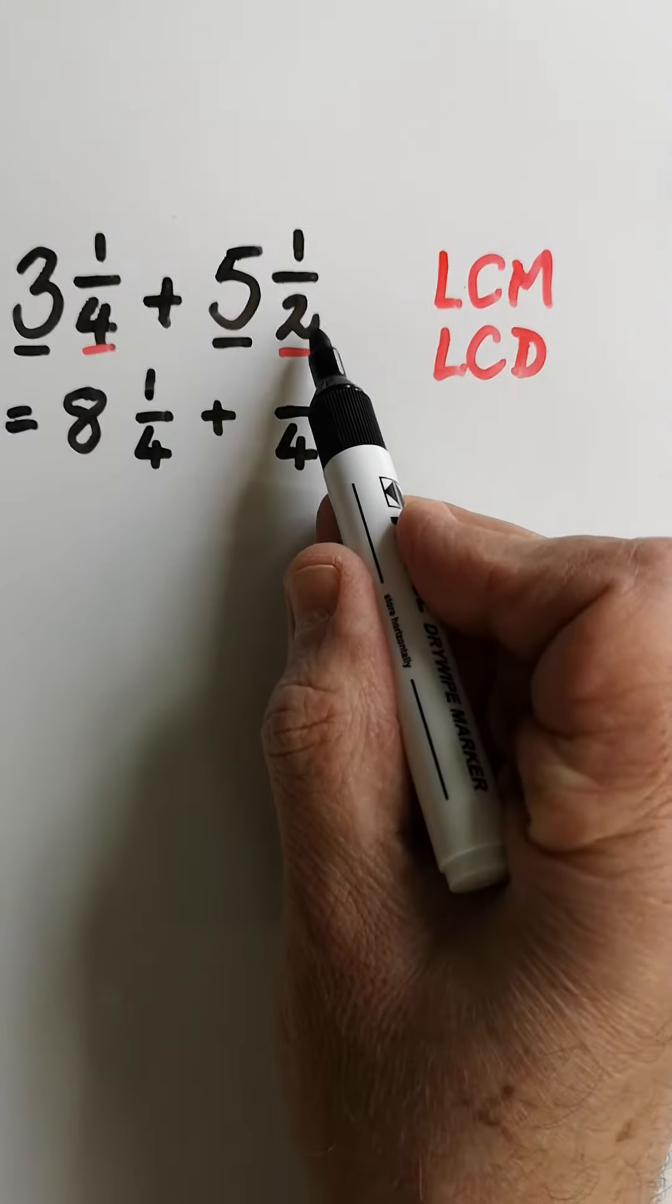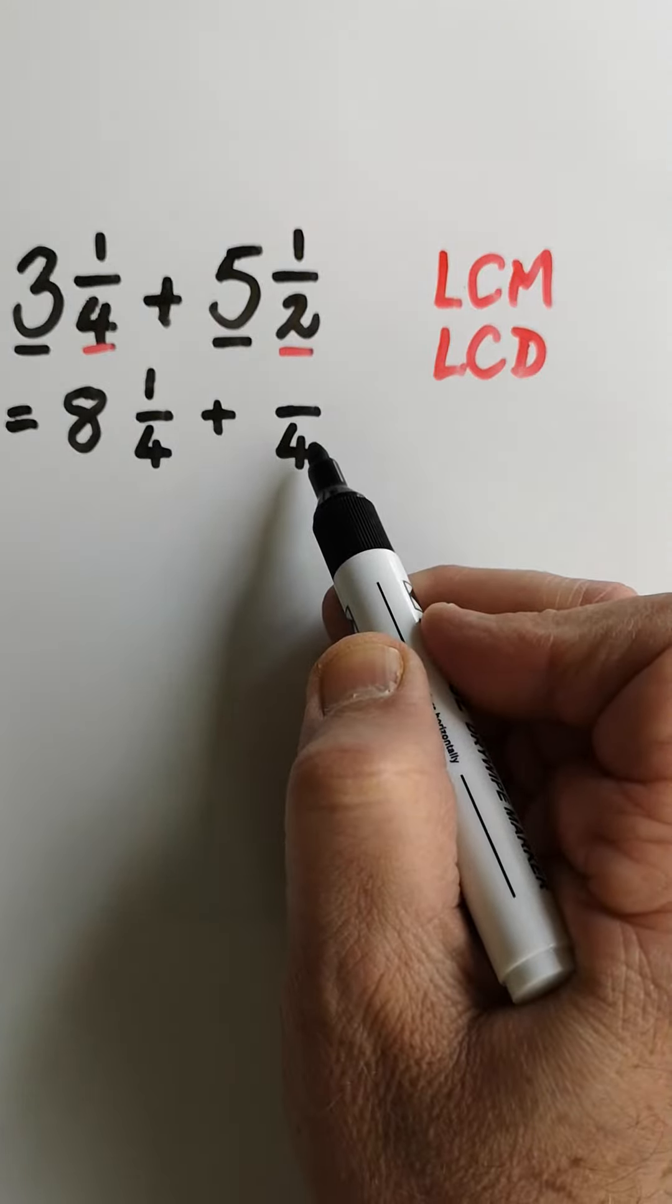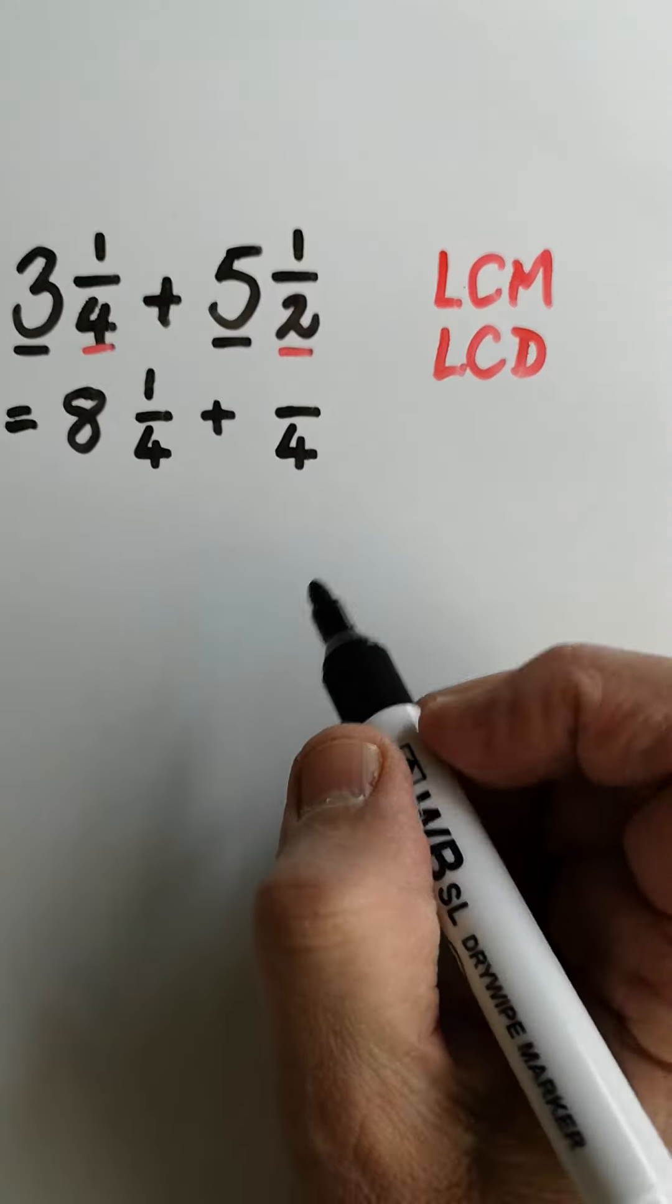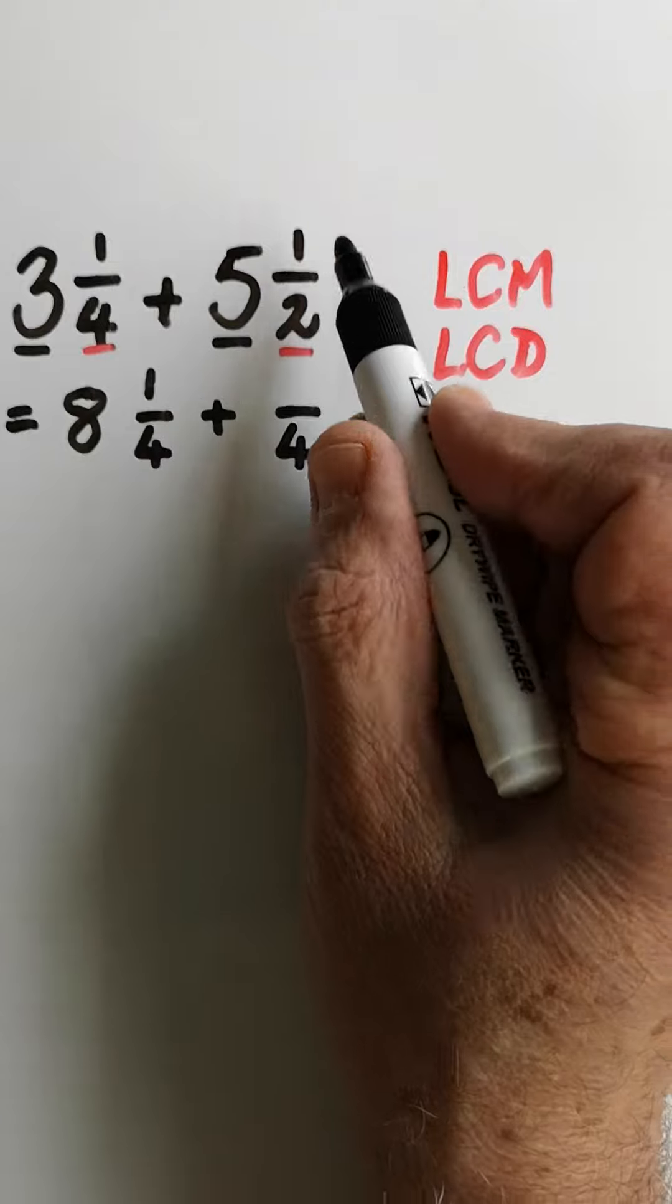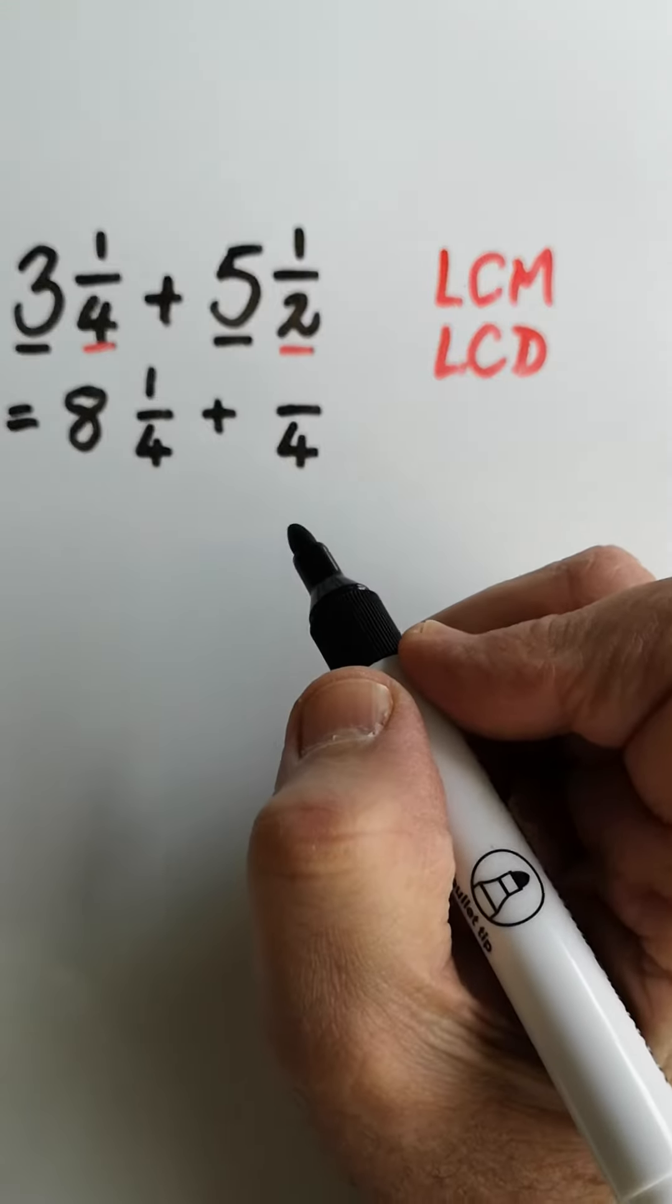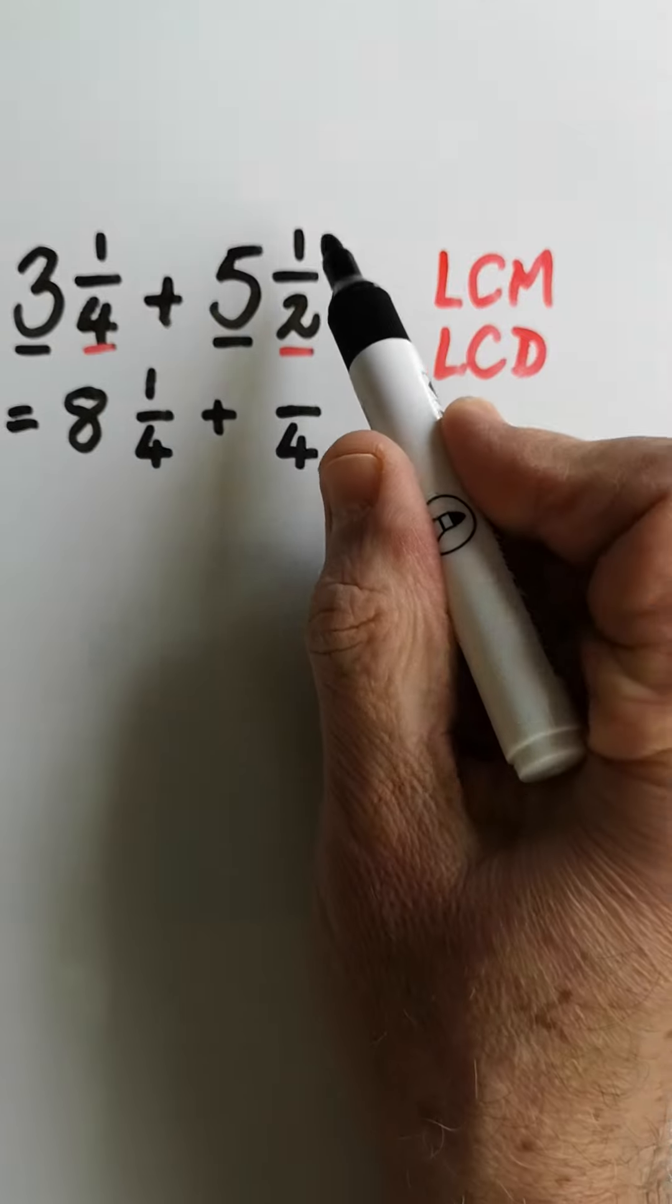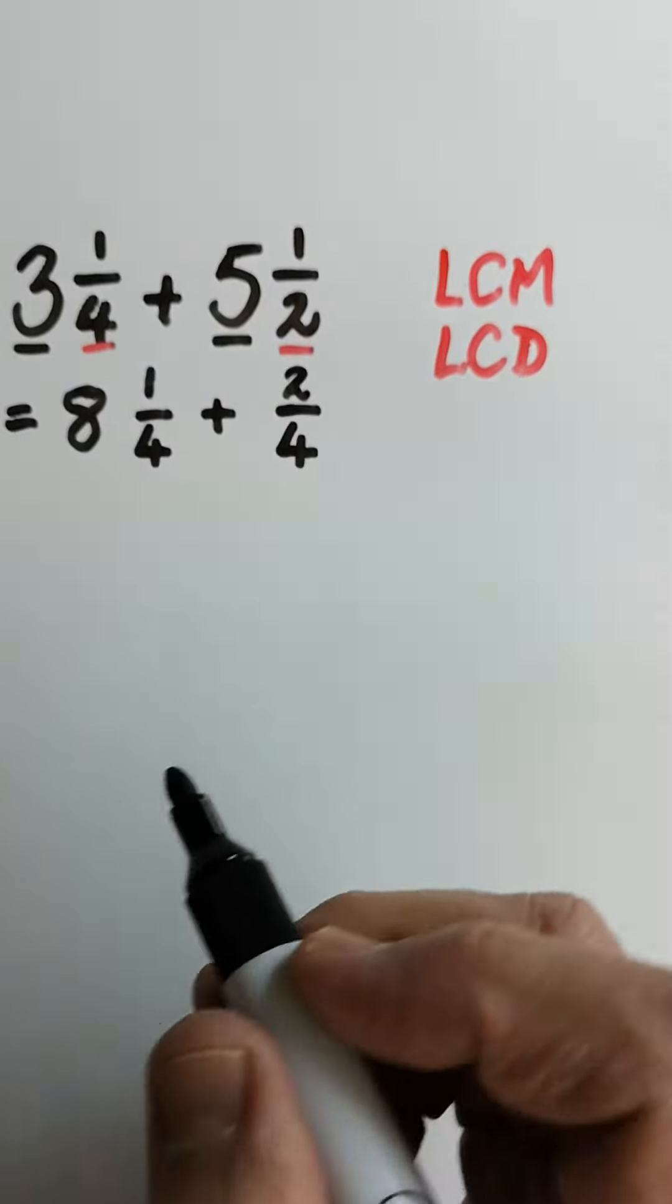But this is going to change. How did we get from that two to that four? What did we do to that two to get four? We multiplied it by two. So what we do to that, we do exactly the same to the numerator. So two times two gave me four, and one times two is two.